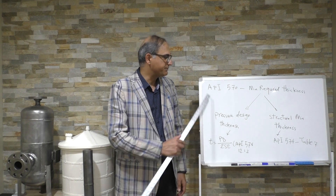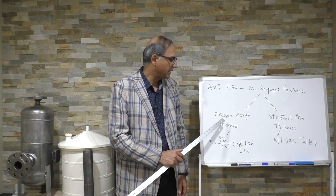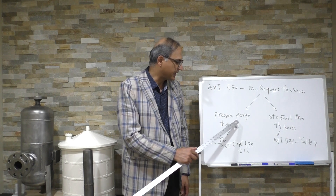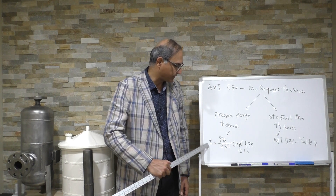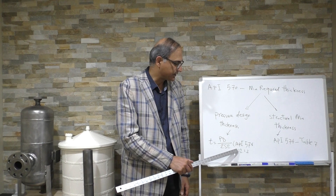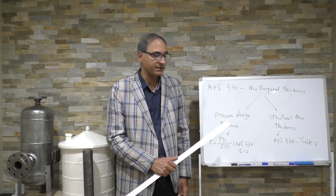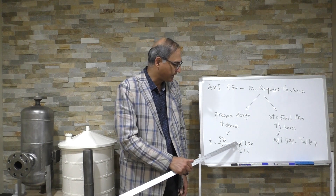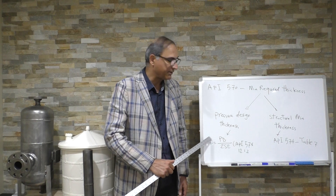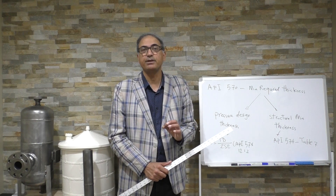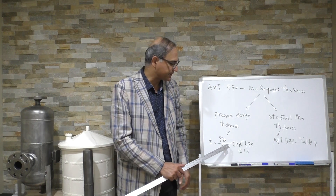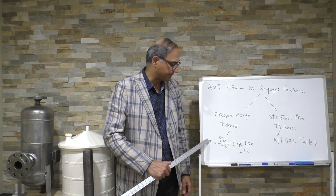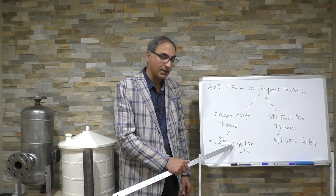Based on the requirement, we have to first calculate pressure design thickness based on this formula, which is taken from API 570 Section 1212. It's the same formula which is in ASME B31.3, but simplified a little bit.